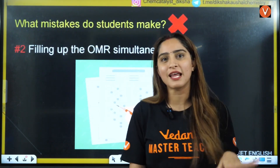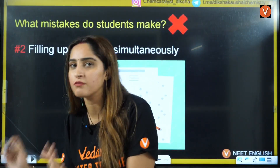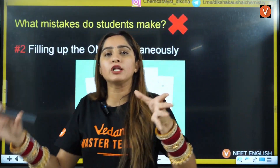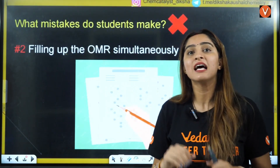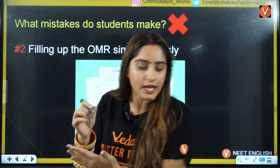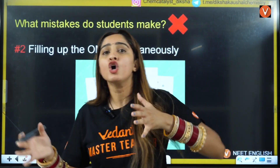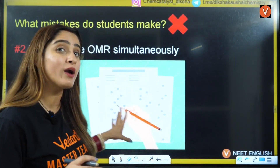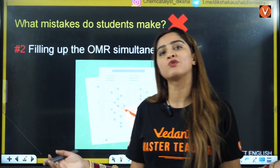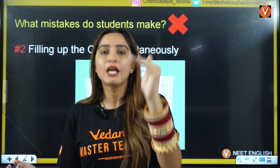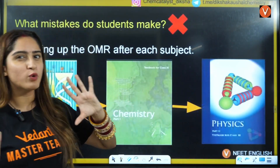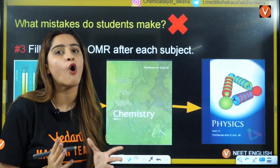The second approach is filling the OMR sheet simultaneously — solving one question, then filling it, then solving the next. This minimizes wrong entries, but the problem is time management. You're constantly switching between solving and filling, which creates too many context switches. In the end you may have only attempted 50 to 70 questions, which is not beneficial if you want to secure a seat.